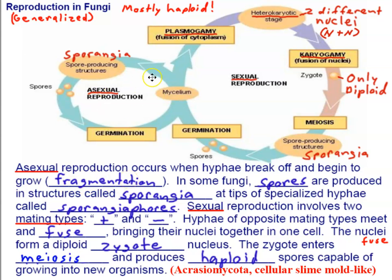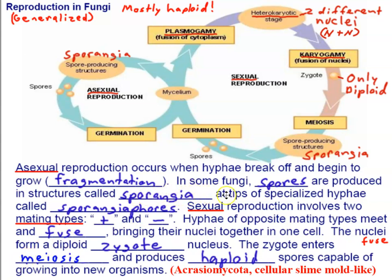These asexual spores are produced from a haploid individual by mitosis from sporangia, the spore-producing structures. The sporangia form at the tips of specialized hyphae called sporangiophores. So sporangiophores form sporangia, which produce spores.